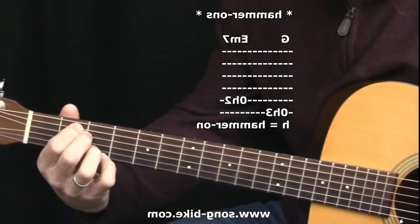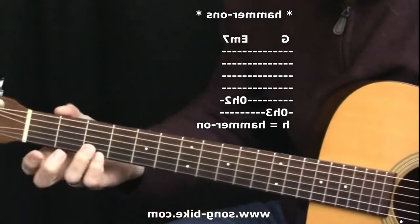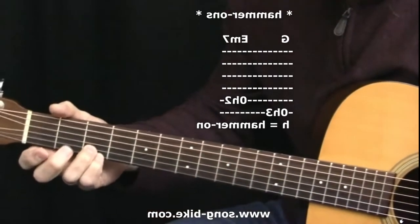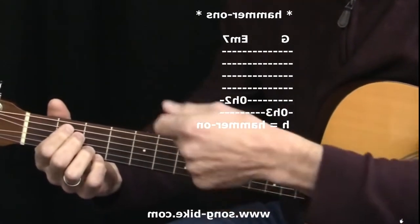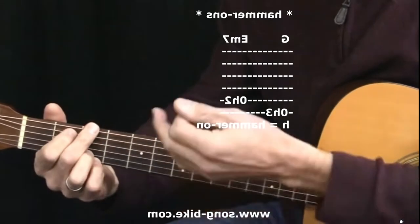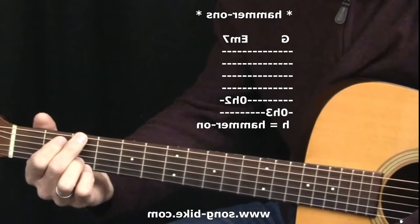Just a couple ways to get creative there with hammer-ons on these two chords. Notice again the droning is continuing on with the two treble strings, but I'm being more articulate with my pick. I'm giving the listener a little more for their money and I'm having more fun myself as well.